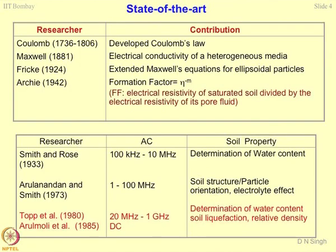A bit on the state of the art on the subject — this is how the subject started. Coulomb's law came in 1736 with the development of Coulomb's law of electricity. Then came Maxwell's law for electrical conductivity of homogeneous media, followed by Fricke's law, which is nothing but the extended Maxwell's equation for ellipsoidal particle shape. Geotechnical engineering people must have adopted this technique from 1924 onwards — it is not a very recent trend, but the exploitation of the technique has been done very recently.